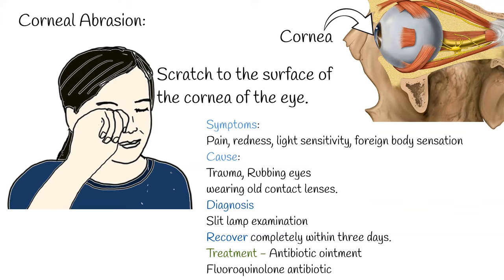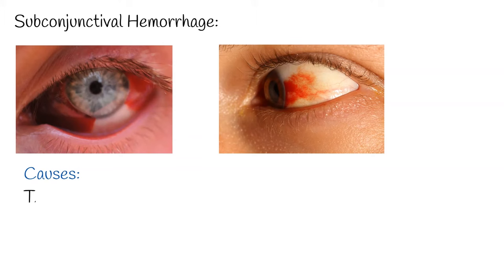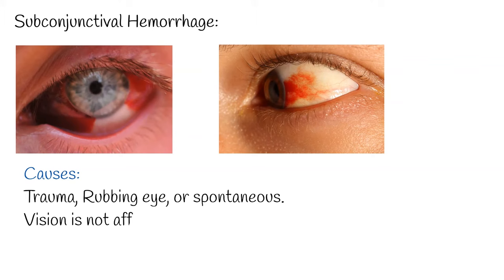Subconjunctival hemorrhage usually occurs because of trauma, rubbing the eye, or spontaneously. It is caused by rupture of small vessels between the episclera and the conjunctiva. It causes red eye, but vision is not affected and the hemorrhage resolves without treatment.